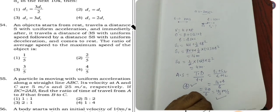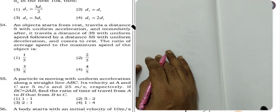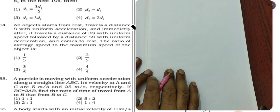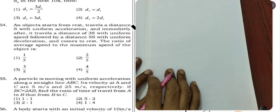It is saying that an object starts from rest. This object starts from rest, travels a distance S with uniform acceleration, and immediately after it travels a distance of 3S with uniform speed, followed by a distance 5S with uniform deceleration, and comes to rest.